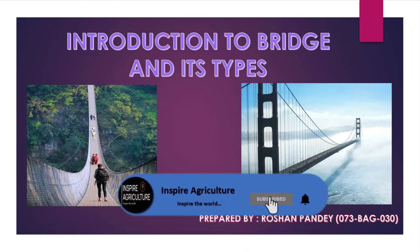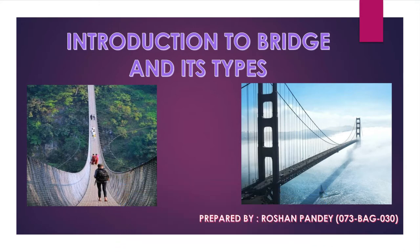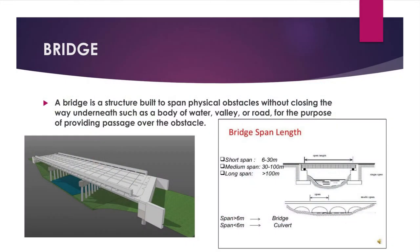Hello everyone. Today we are going to describe the introduction to bridges and their types. A bridge is a structure built to span physical obstacles without closing the way underneath, such as a body of water, valley, or road, for the purpose of providing passage over the obstacle.